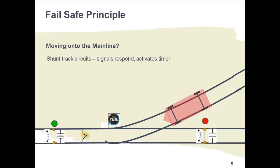Until the timer runs out, the timer prohibits throwing the switch. The signal design engineer sets the duration to fit the type of trains on the line — their speeds, lengths, braking distances, etc. After a running time of typically five to eight minutes, the electric lock on the switch is released. Then the trainman on the red train walks over to the switch, hand-throws it, walks back to the train, and moves the train onto the main line.